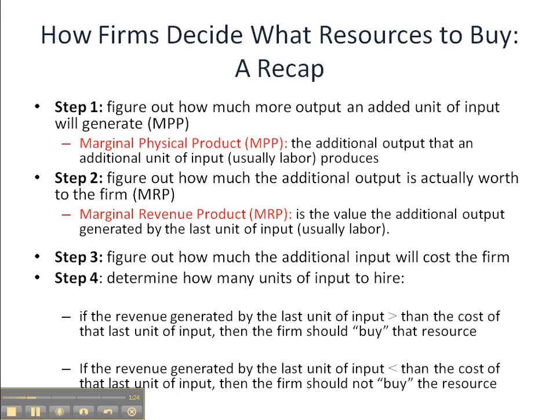I'm going to go ahead and spoil the plot here. Conceptually, if the revenue generated by the last unit of input is greater than the cost of that unit of input, then the firm should buy the resource. And if the revenue generated by the last unit of input is less than the cost of the last unit of input, then the firm should not buy.